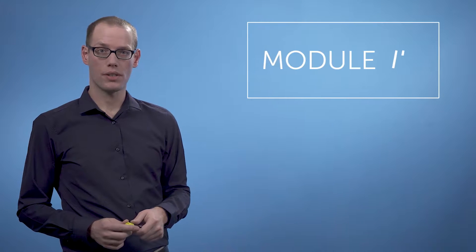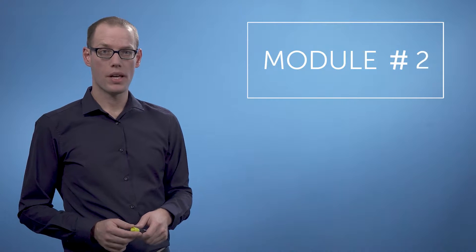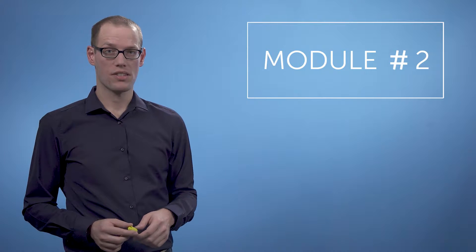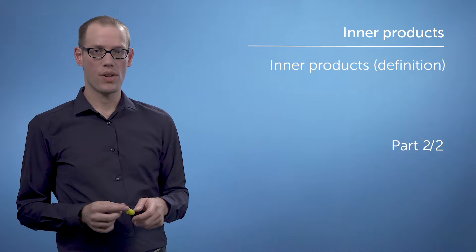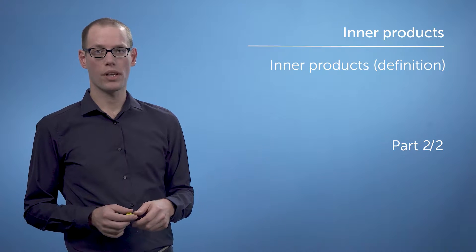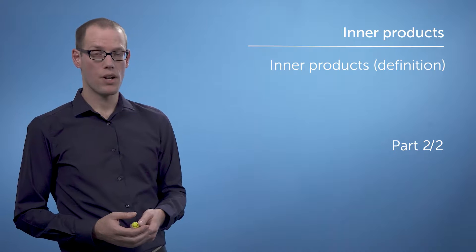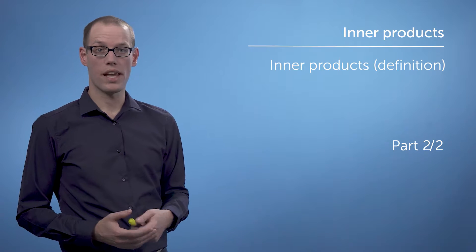Previously we looked at the dot product to compute angles, lengths and distances. In this video we will be looking at generalizations of the dot product in order to compute angles, lengths and distances. Sometimes it is necessary to use an unconventional way to measure these geometric properties, and the inner product allows us to do exactly this kind of thing.